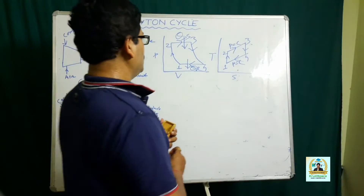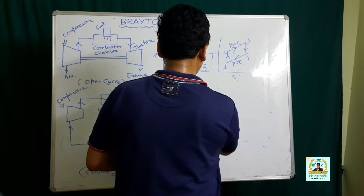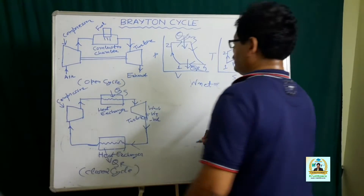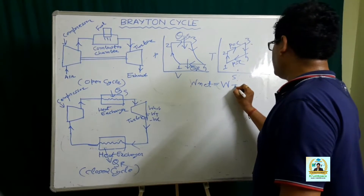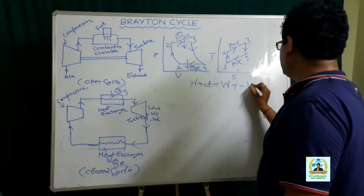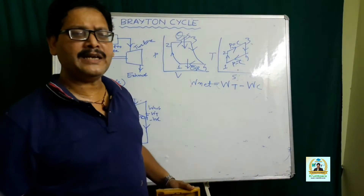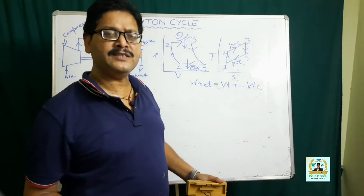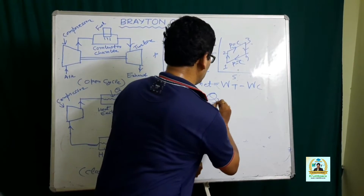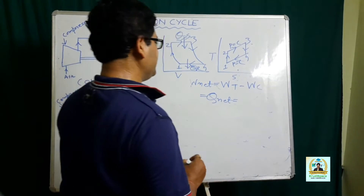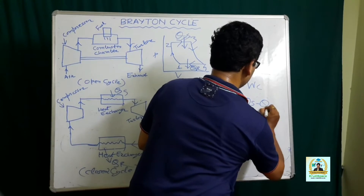The net work produced is the difference between the work developed in the turbine and the work consumed in the compressor. As we know, in a cyclic process the net heat transfer is equal to the net work transfer. So net work equals Q_net, which equals heat supplied minus heat ejected.